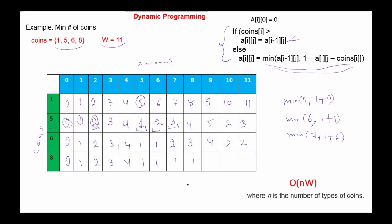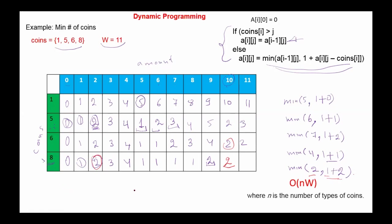Continuing with coin 8: for column 9, 9 is not greater than 8, so we pick the minimum of the above cell (4) or (1 + value at column 1 = 1), giving 2. For column 10: minimum of above (2) or (1 + value at column 2 = 2), giving 2. For column 11: minimum of above (2) or (1 + value at column 3 = 3), giving 2. So the minimum number of coins to make 11 is 2.